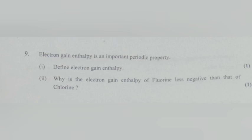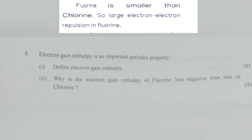Part 2: Why is the electron gain enthalpy of fluorine less negative than that of chlorine? Answer: Fluorine is smaller than chlorine, so large electron-electron repulsion in fluorine.